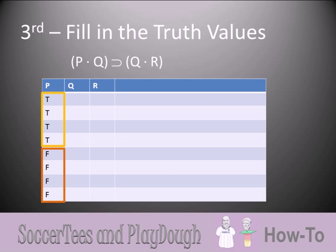Luckily, there is a simple method that will always get it right. In the P column, the first half are true and the second half are false — four T's and four F's. When we move to the Q column, we take that four and divide it in half to get two, so the first two rows will be true and the next two will be false, and we repeat that pattern until we complete the column. Now we have four truth value combinations: P and Q both true, P true and Q false, P false and Q true, and both false.